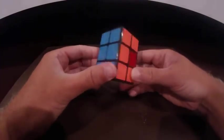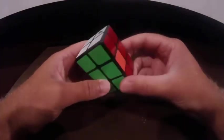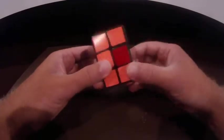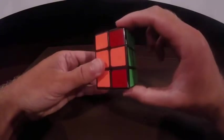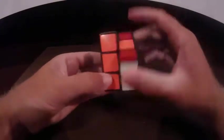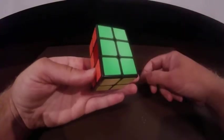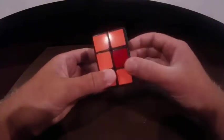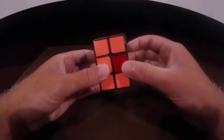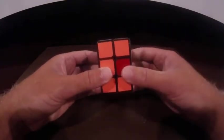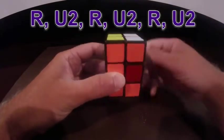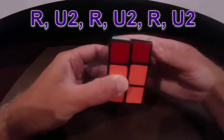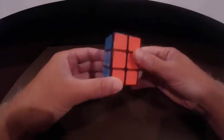All right, now I'm getting pretty close. The only two that are still in the wrong spots are these. Okay, so again, basically what I want is that. So these two just need to be switched. So I'm going to do that same thing. The ones that you want switched should be on your right and you're just going to do right, up twice, right, up twice, right, up twice. And there you go.